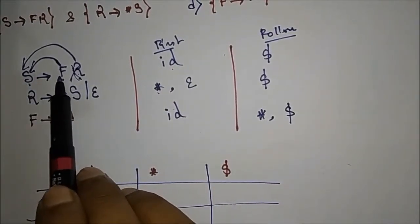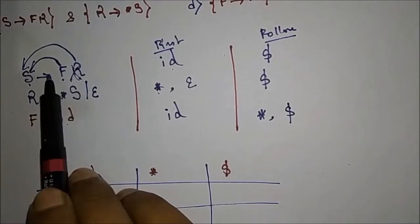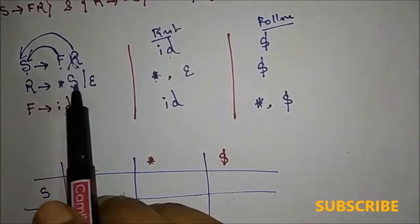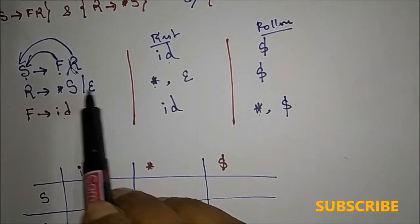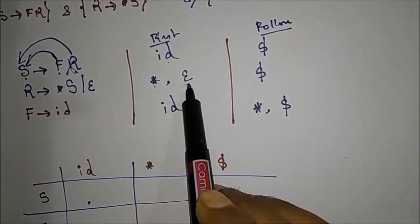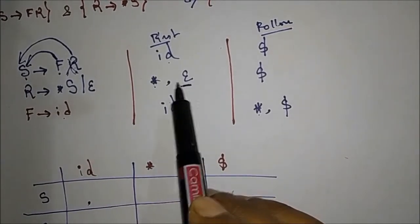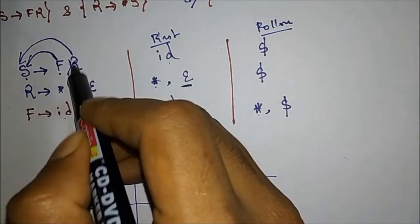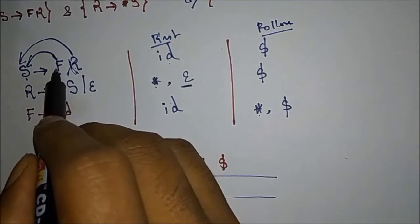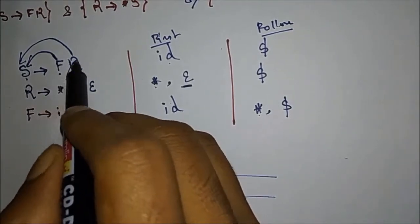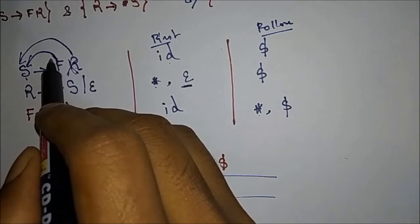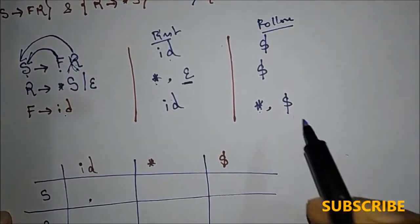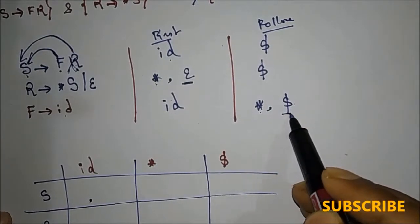To repeat: FOLLOW(F) = FIRST(R) minus epsilon, plus FOLLOW(S) if epsilon is in FIRST(R). FIRST(R) is asterisk, so we write asterisk. Since epsilon is in FIRST(R), we also include FOLLOW(S) which is dollar. So FOLLOW(F) = {*, $}.